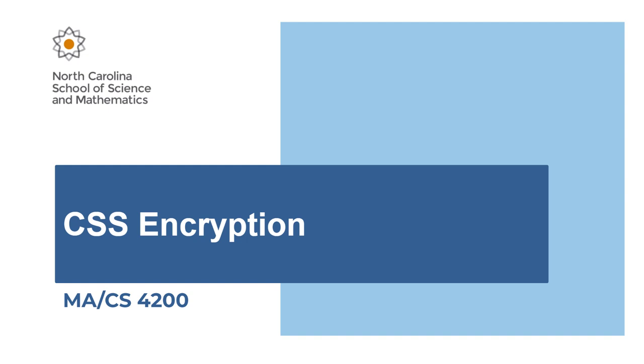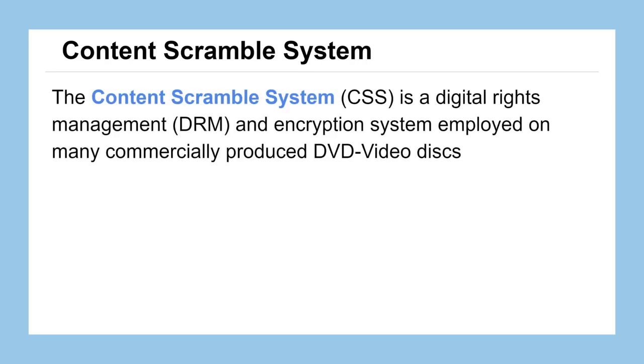In this lesson we'll be looking at a very well-known encryption scheme called CSS. CSS stands for the Content Scramble System and it's a digital rights management system, abbreviated DRM, that goes hand-in-hand with cryptography work. It's a system that was used for pretty much all DVD video discs that were produced back in the day.